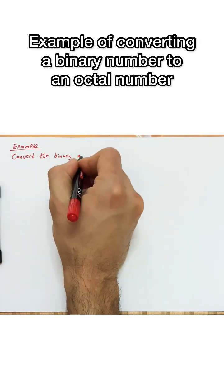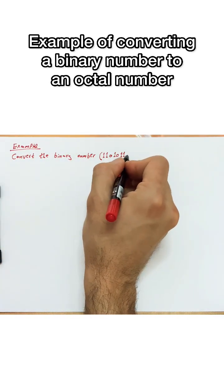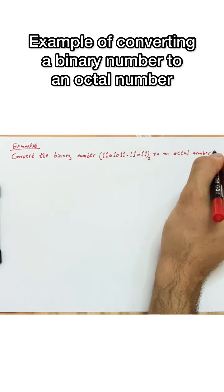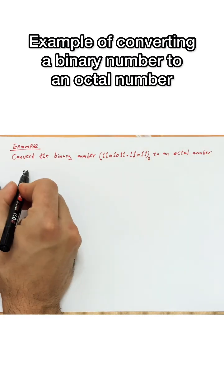Example 2. Convert the binary number 1101011.11011 to an octal number system. First, we will be grouping the binary digits of 3.